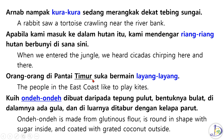Orang-orang di pantai timur suka bermain layang-layang. Kuih ondeh-ondeh dibuat daripada tepung pulut. Bentuknya bulat, di dalamnya ada gula dan di luarnya ditabur dengan kelapa parut. Ondeh-ondeh is made from glutinous flour, is round in shape with sugar inside and coated with grated coconut outside.